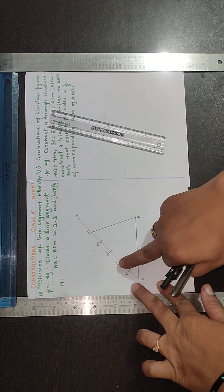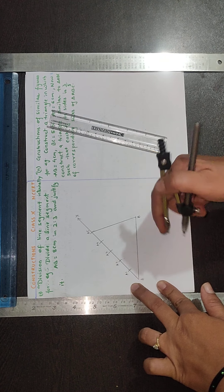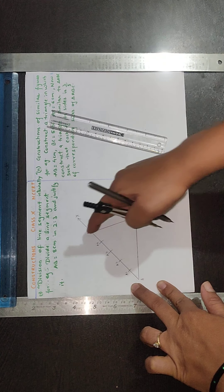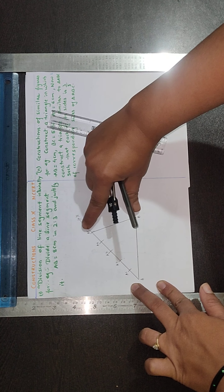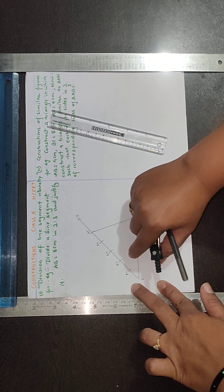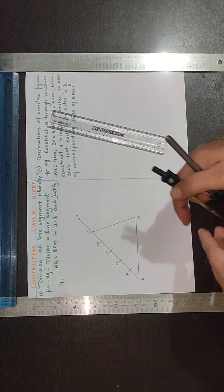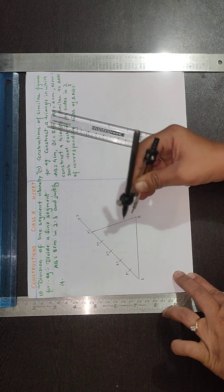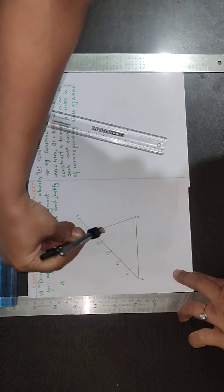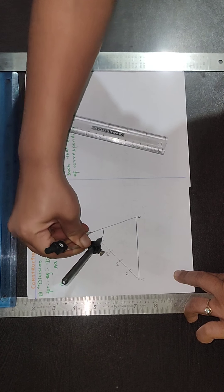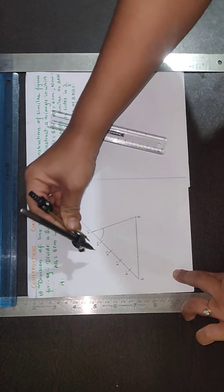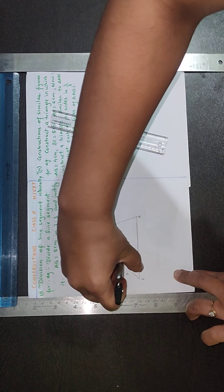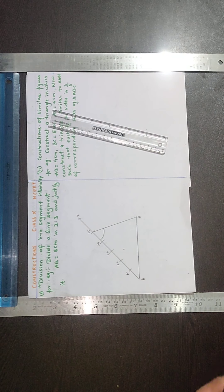Now we have to draw A2 and this line wherever it will be should be parallel to this line. So just start with this, take any angle. Take from here, mark an angle like this and from here again with the same radius mark like this.